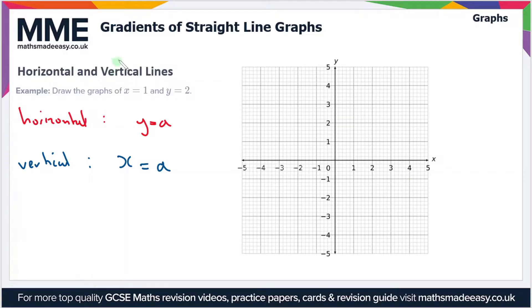If we have a look at this example question: draw the graphs of x equals 1 and y equals 2. Here we have a horizontal and a vertical line, so which one's which? Well, x equals 1 is in the form x equals a, so that's a vertical line. And y equals 2 is a horizontal line because it's in the form y equals a, where a is 2 in this case.